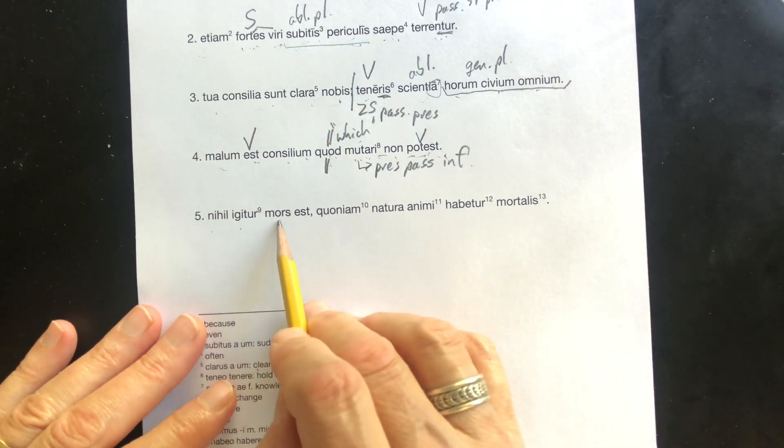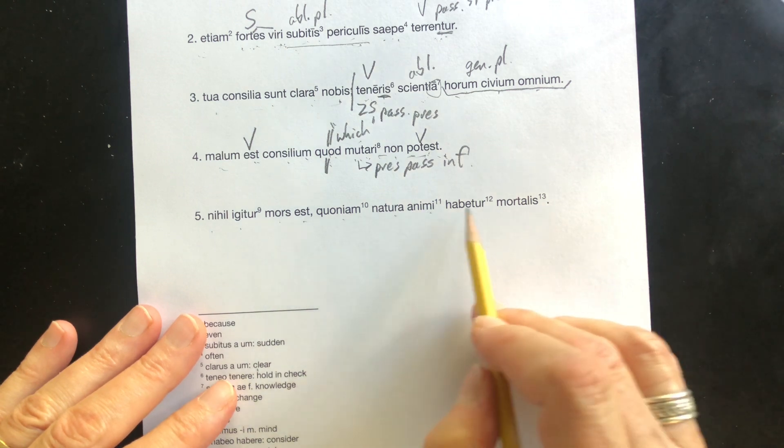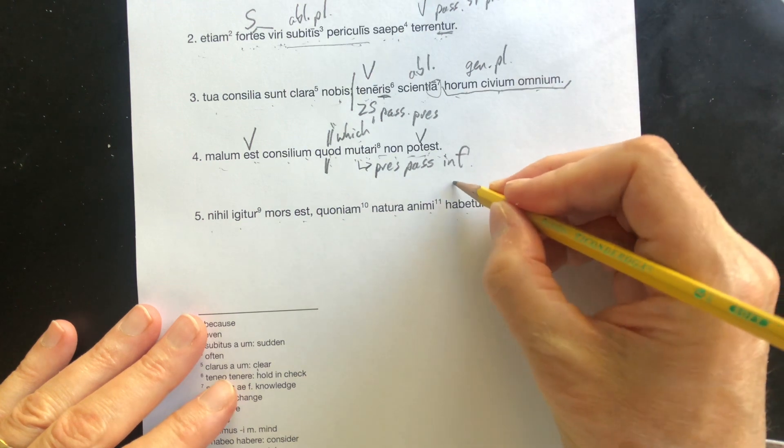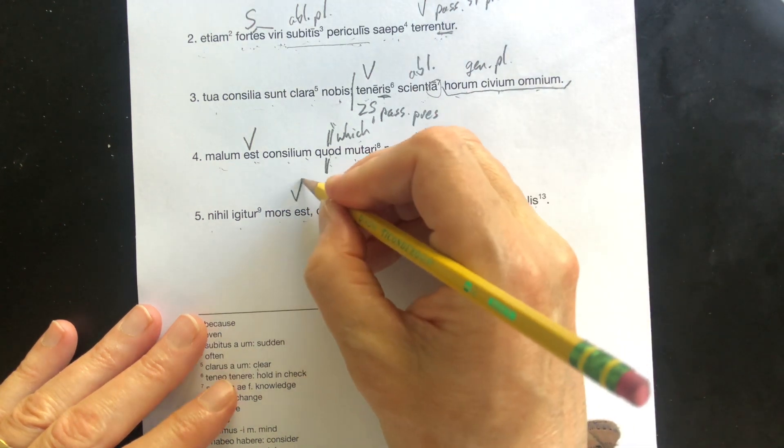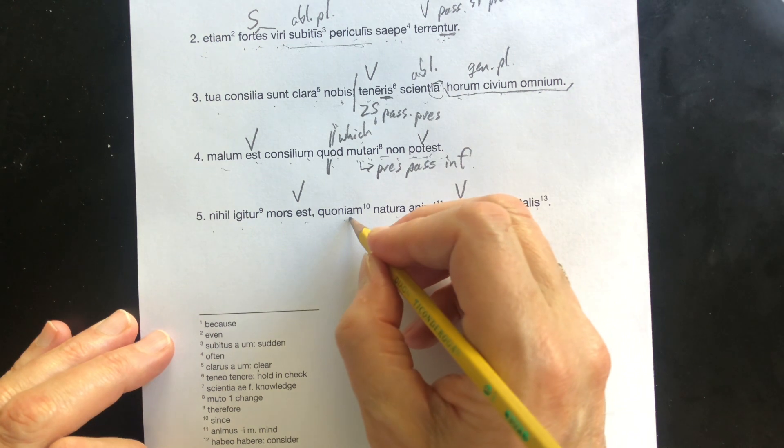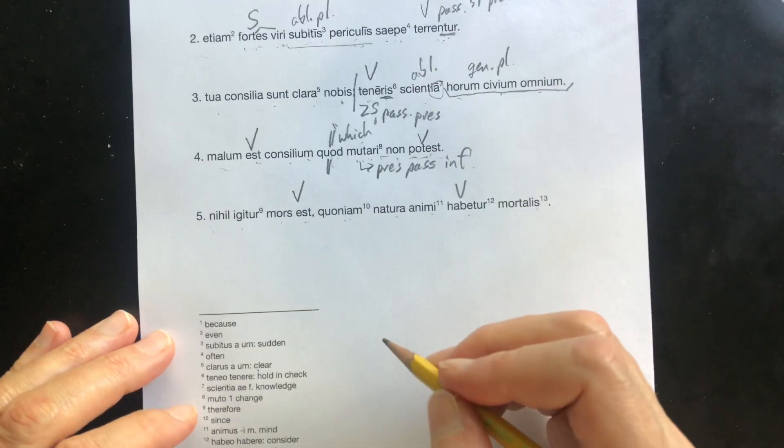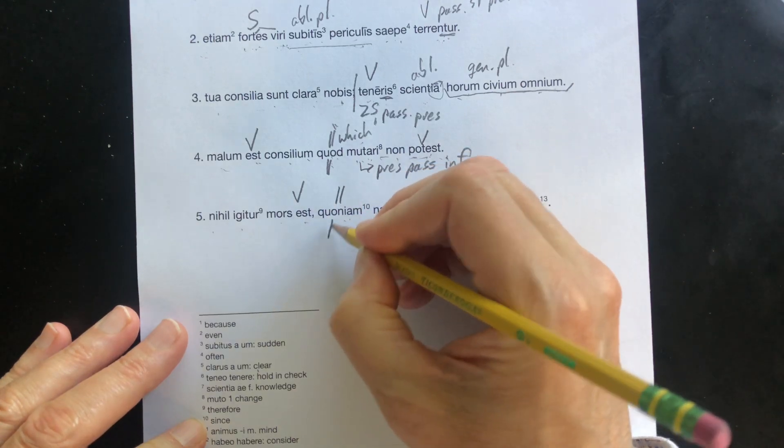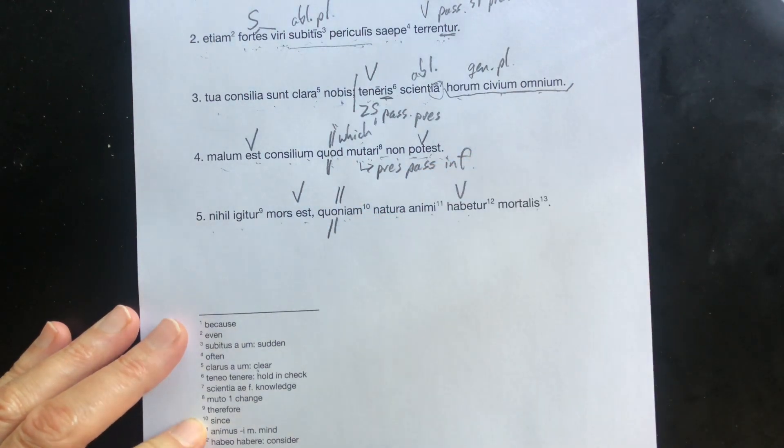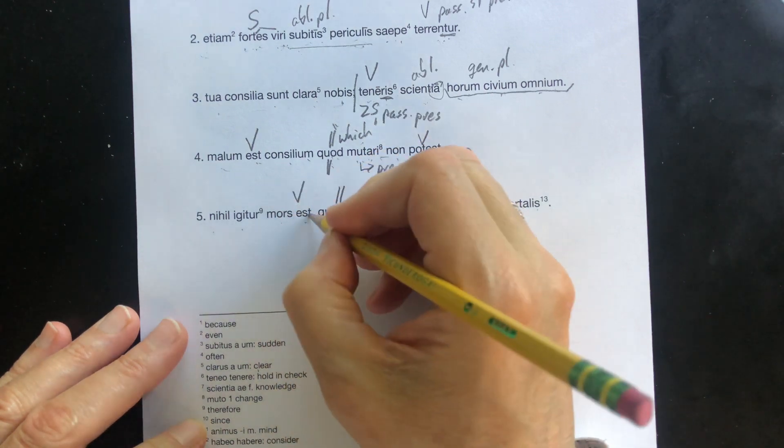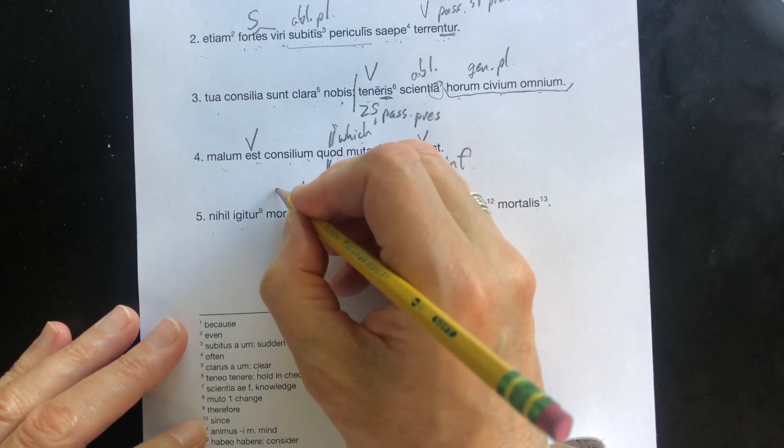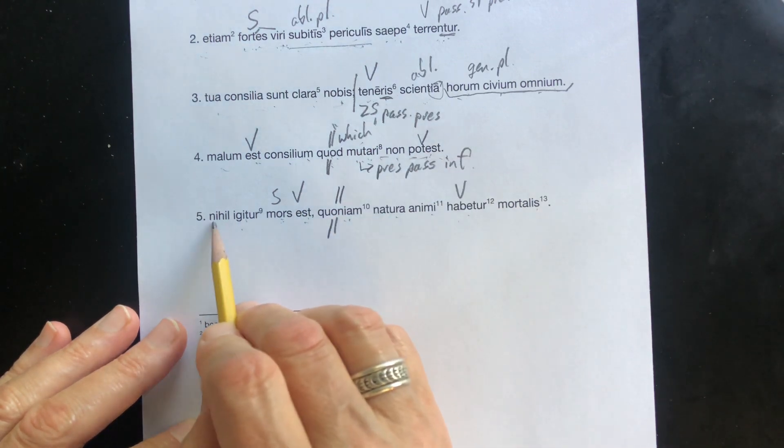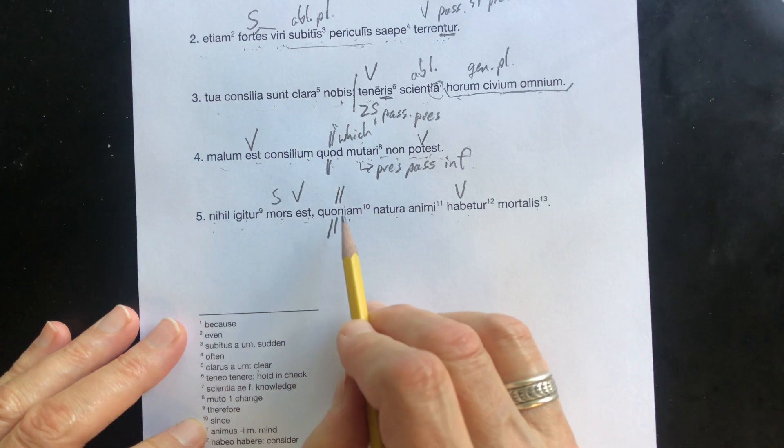Nihil igitur mors est, quoniam natura animi habetur mortalis. Now, there's two verbs in here, so we've got to find some kind of joiner. This quoniam, look in the note there, that means since. So that's kind of the splitter there. Since. We're looking for a singular subject. There it is. Mors. Death is therefore nothing.